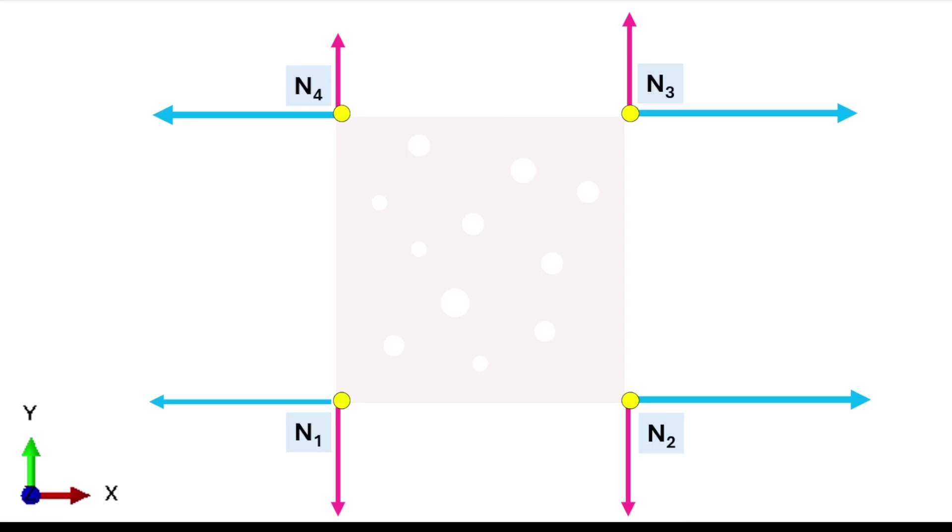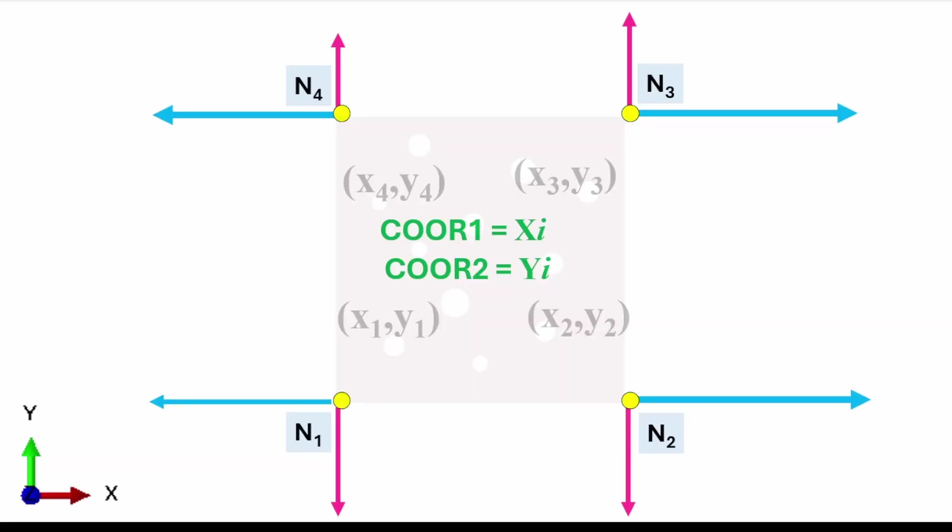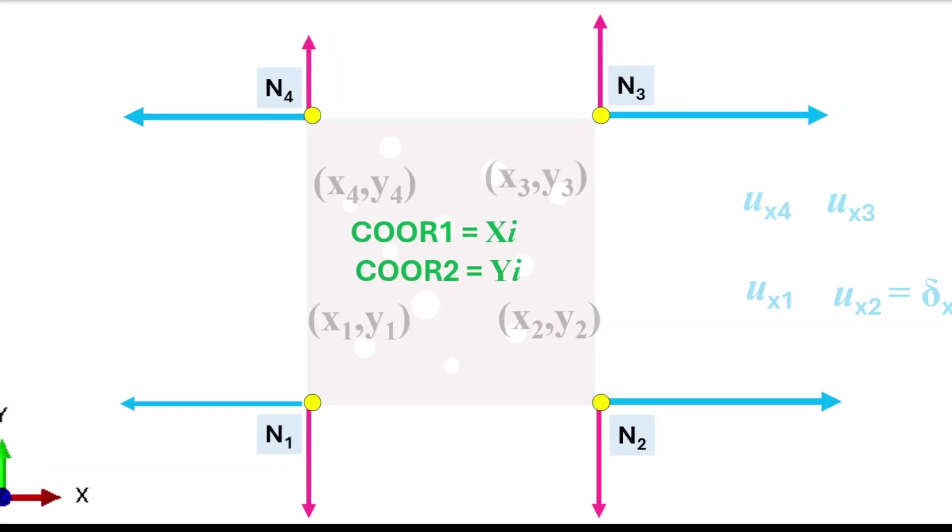I'm going to assemble all the coordinate positions, and I need to ask my model to give me these values during the simulation. There's a variable called COOR1, which is the coordinate position in the x direction, and COOR2, the coordinate position in the y direction. Once I set the model, I'll ask these values to be history variables.